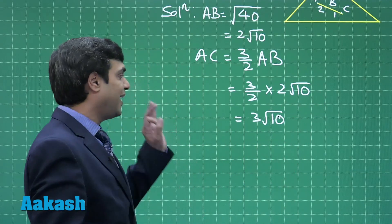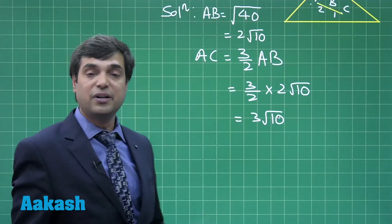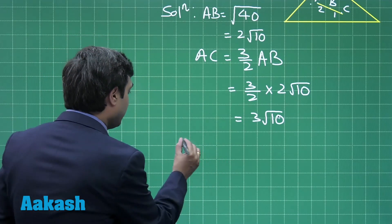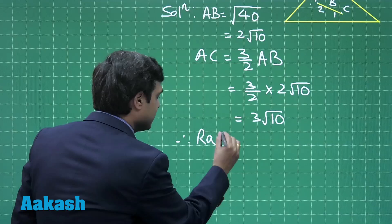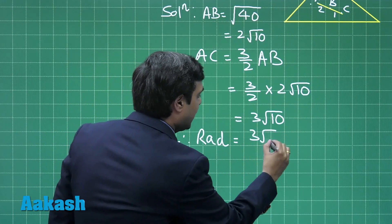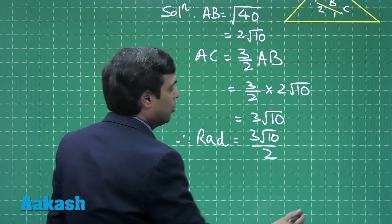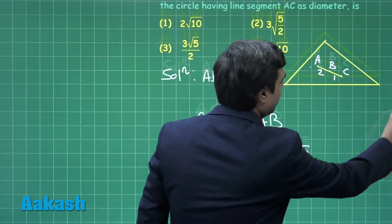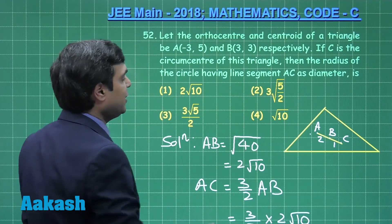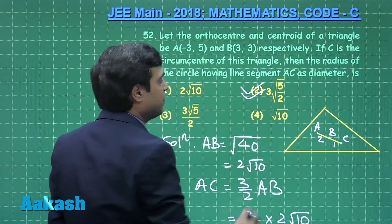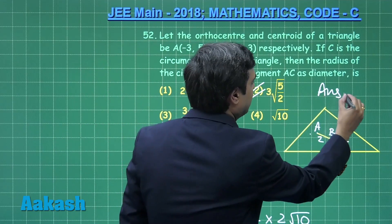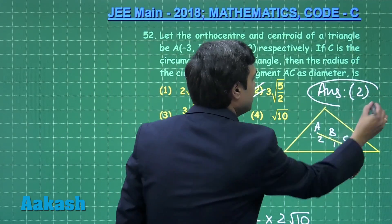So AC = (3/2) × 2√10 = 3√10, which is the length of the diameter. The required radius is therefore 3√10 / 2. Looking at the given options, this equals 3√5 / 2, so the correct answer is option number 2.